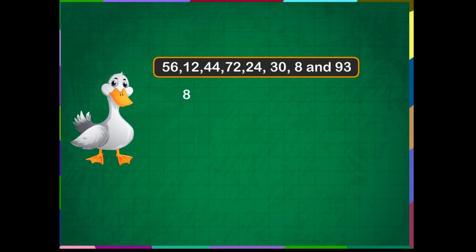8 is the smallest, and the next smaller number is 12. Then comes 24. Then, it is 30. 44 is the next smallest number. 56 comes next.